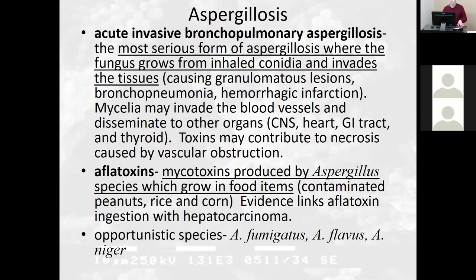I hope when you're down in lab today you're remembering some of these stories and you'll be a little careful about capping and uncapping plates — not flicking them around the room and not breathing any of it in. Be careful. Aflatoxins are mycotoxins produced by Aspergillus species which grow in food items — contaminated peanuts, rice, and corn. Aflatoxin ingestion can lead to hepatocarcinoma. Think about jumping into a grain storage bin — nobody tells you to worry about that. These are opportunistic species; you either have Aspergillus flavus or Niger downstairs. We got Aspergillus flavus growing downstairs.